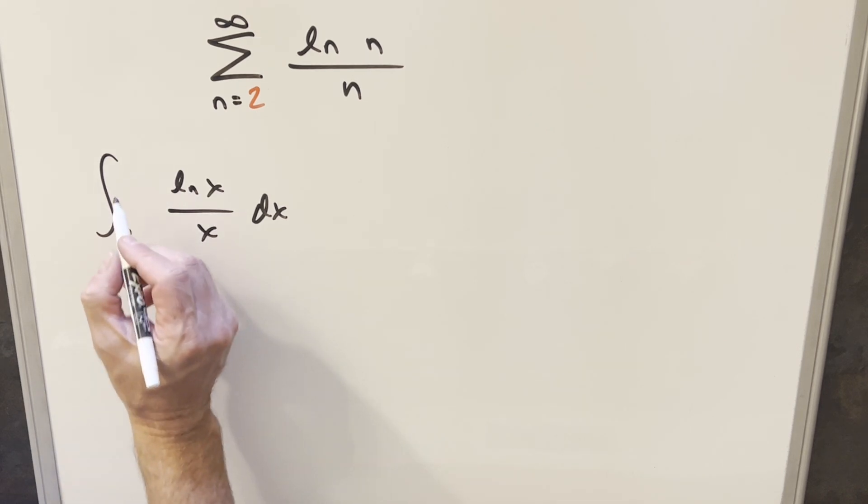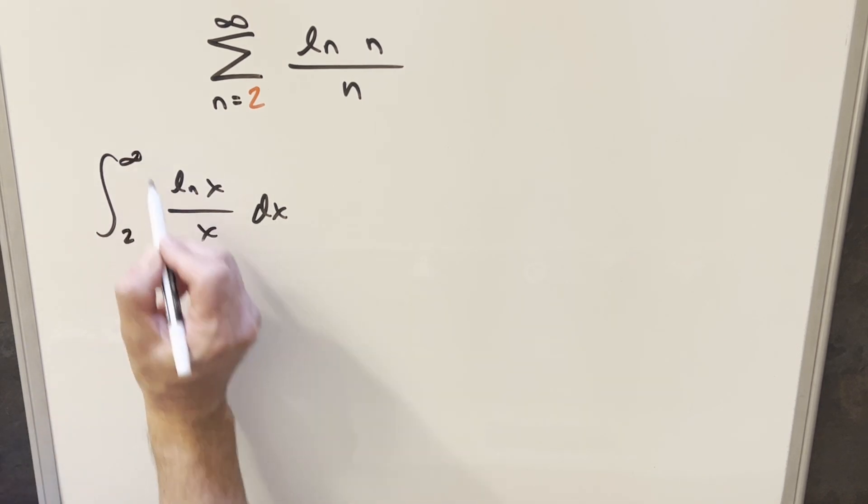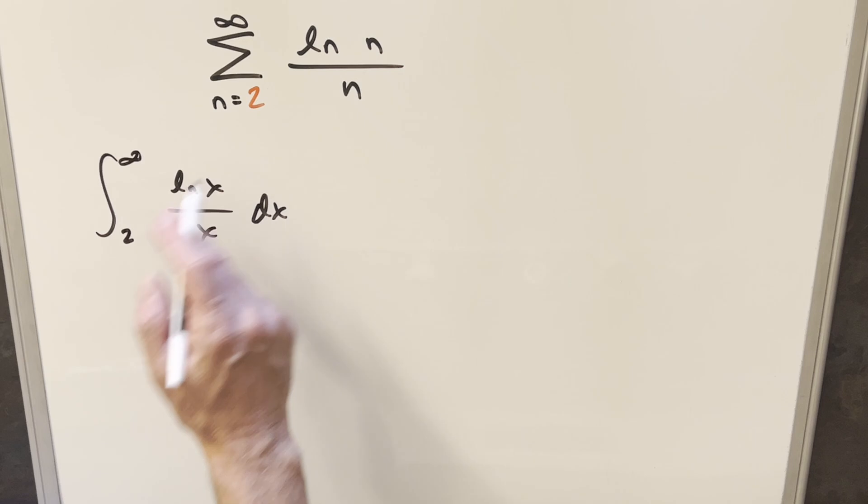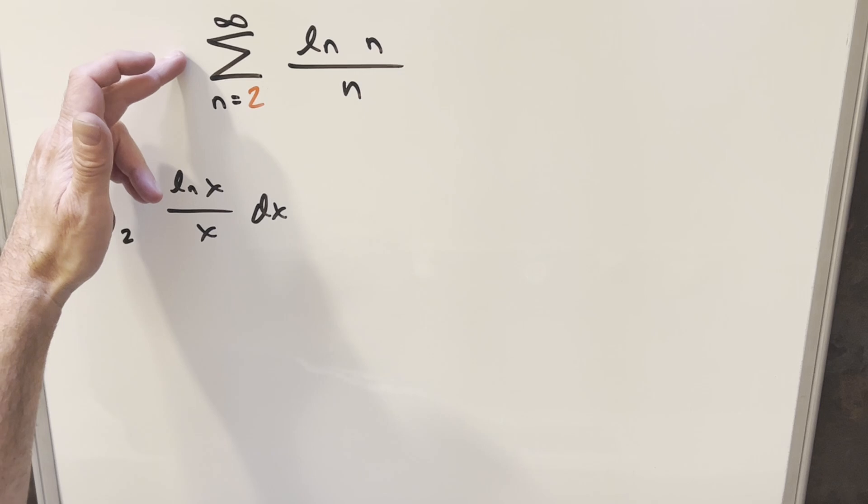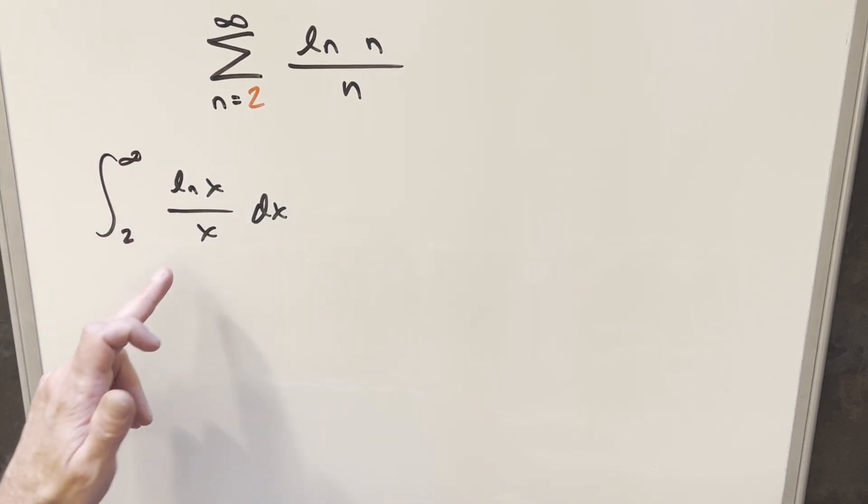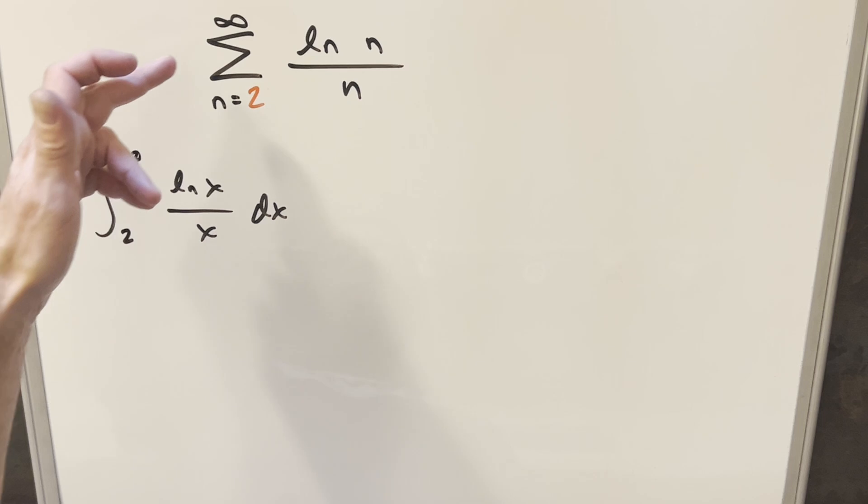Well, this is going to be perfectly set up for a u substitution for us. What we need to do for this, for the integral test, is we want to look at this integral, same bound, so we're going 2 to infinity. We don't care what the value of this integral is. That's not going to be the same thing as the value of the series. We just want to know, does this integral diverge or converge? If it diverges, the series diverges. If it converges, the series converges.